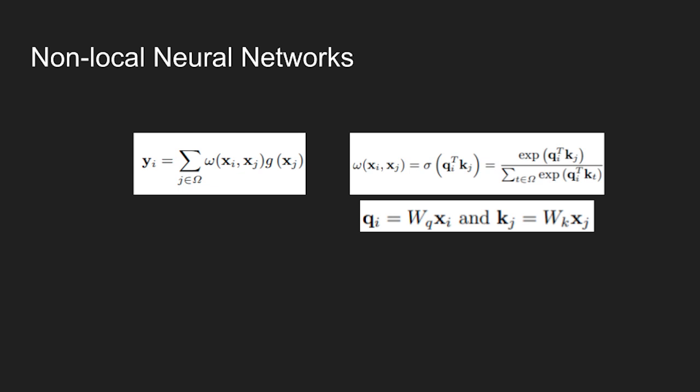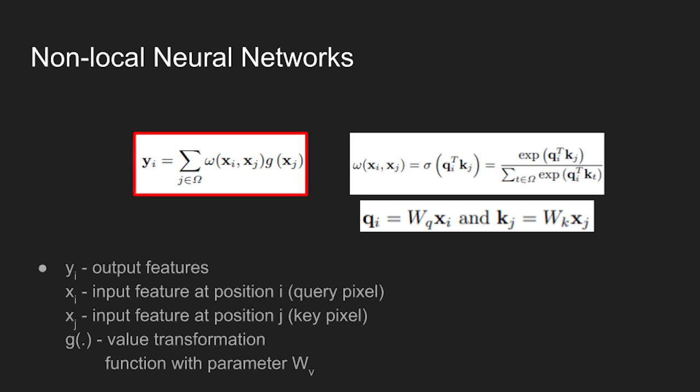Nonlocal Neural Network is shown in Equation. The equation on the left computes the long-range dependencies between the features. yi represents output features, x represents the input feature at position i and j, and g is the value transformation function with parameter wv.